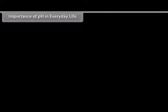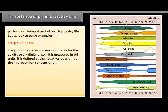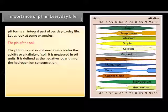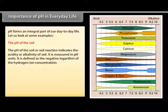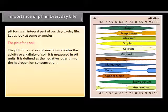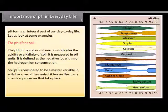The pH of the soil indicates the acidity or alkalinity of soil, measured in pH units. It is defined as the negative logarithm of the hydrogen ion concentration. With the increase in the amount of hydrogen ions in the soil, the soil becomes more acidic. Soil pH is considered a master variable in soils because of its control over many chemical processes.